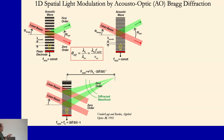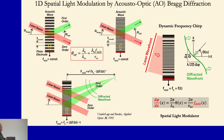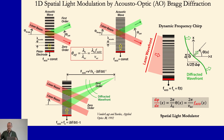Peter Saggau's group showed that AODs can not only do 2D scans but can also focus light. Instead of a wave at constant frequency, you put a wave with varying frequency and you can focus light — it acts as a lens. So it is very appealing for 3D scanning. Going further, we published that if you put a complex pattern of frequencies in the AOD, it will modify the wavefront of the light in a manner related to that frequency pattern. The derivative of the wavefront phase is directly proportional to the frequency at that point: dφ/dx = f. So in principle, an AOD is a wavefront shaper — you can scan in X, Y, Z, and also create complex waveforms to manipulate light and create patterns.